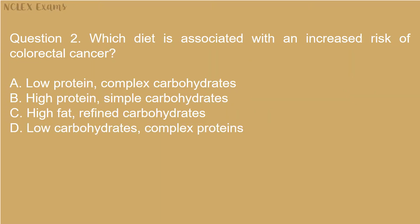Question 2: Which diet is associated with an increased risk of colorectal cancer? A. Low protein, complex carbohydrates. B. High protein, simple carbohydrates. C. High fat, refined carbohydrates. D. Low carbohydrates, complex proteins.